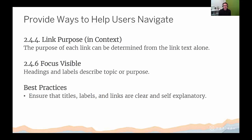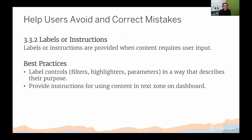For navigation, make sure there are good descriptions, good headings, good labels, and descriptive text for links — not just 'link,' but something descriptive about where the link goes. The best practice is to make sure all titles, labels, and external web links in your visualization are clear and self-explanatory. The final guideline is helping users avoid mistakes: label all of your controls, filters, and highlighters in a way that describes their purpose, and provide instructions for using the content in a text zone in the dashboard or in HTML next to the visualization.